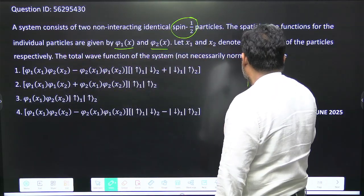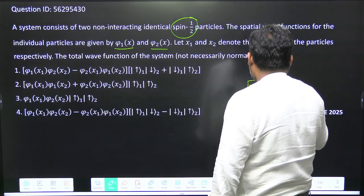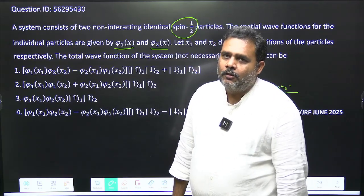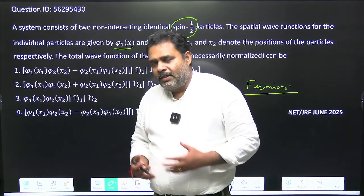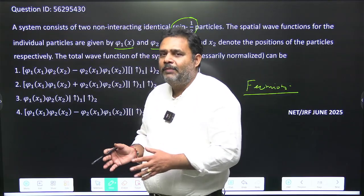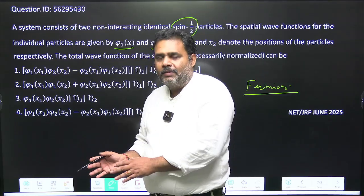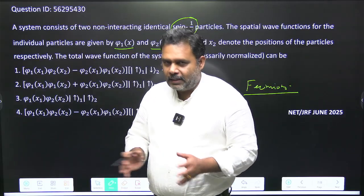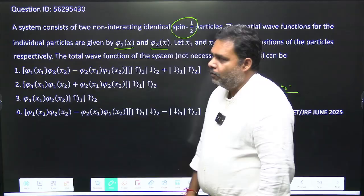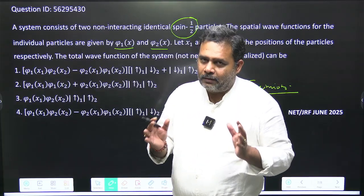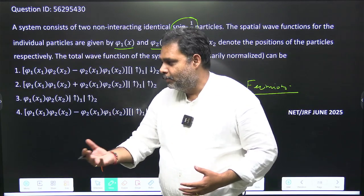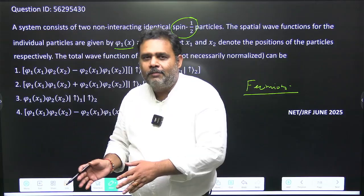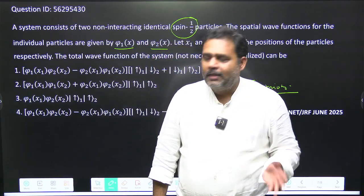Spin-half particles are fermions. For fermions, the total wave function must be anti-symmetric. What does anti-symmetric mean? If the space part is symmetric then the spin part must be anti-symmetric, and if the spin part is symmetric then the space part must be anti-symmetric. So you have to consider the total wave function, not just the space part or the spin part alone.